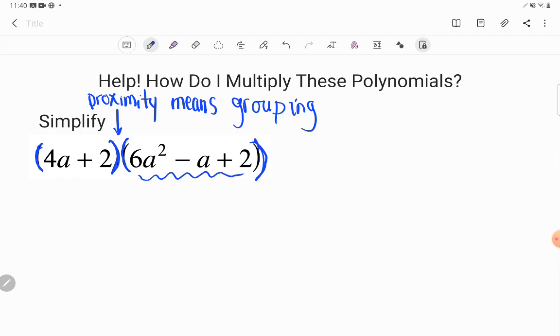And we see the same thing over here in this other grouping. 6a squared, that's an a squared term. Minus a, that's a plain old a term. Plus 2, that's a constant term, a regular number. None of these are like, they cannot combine.